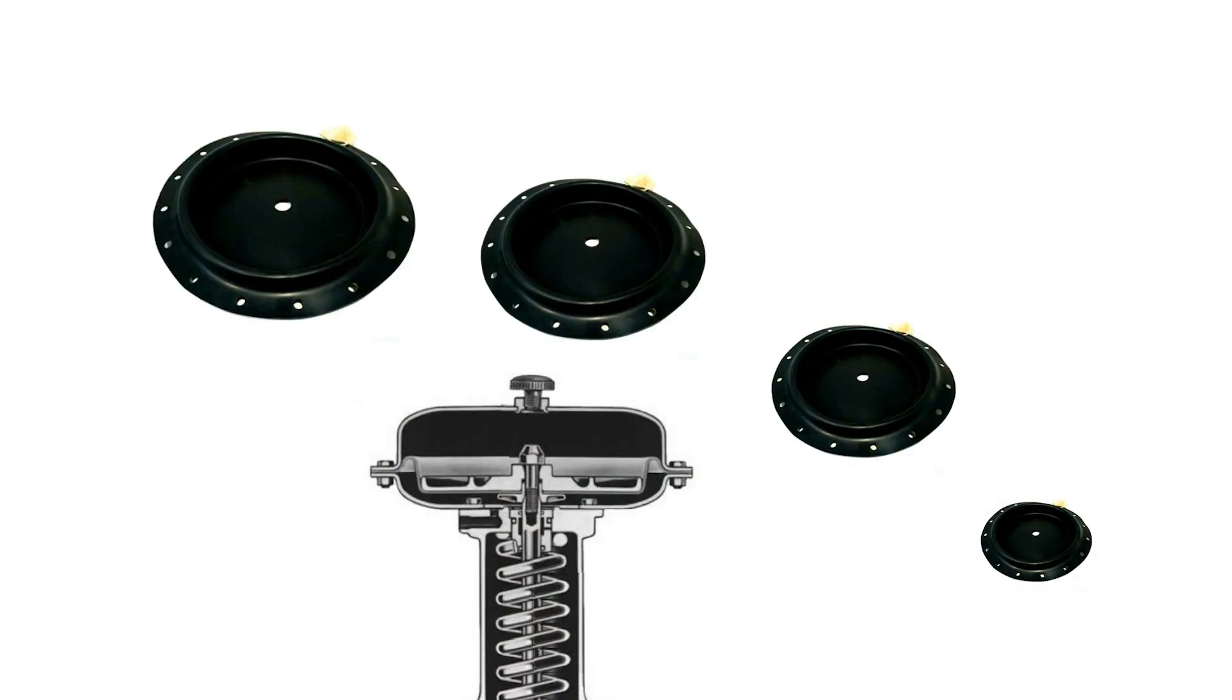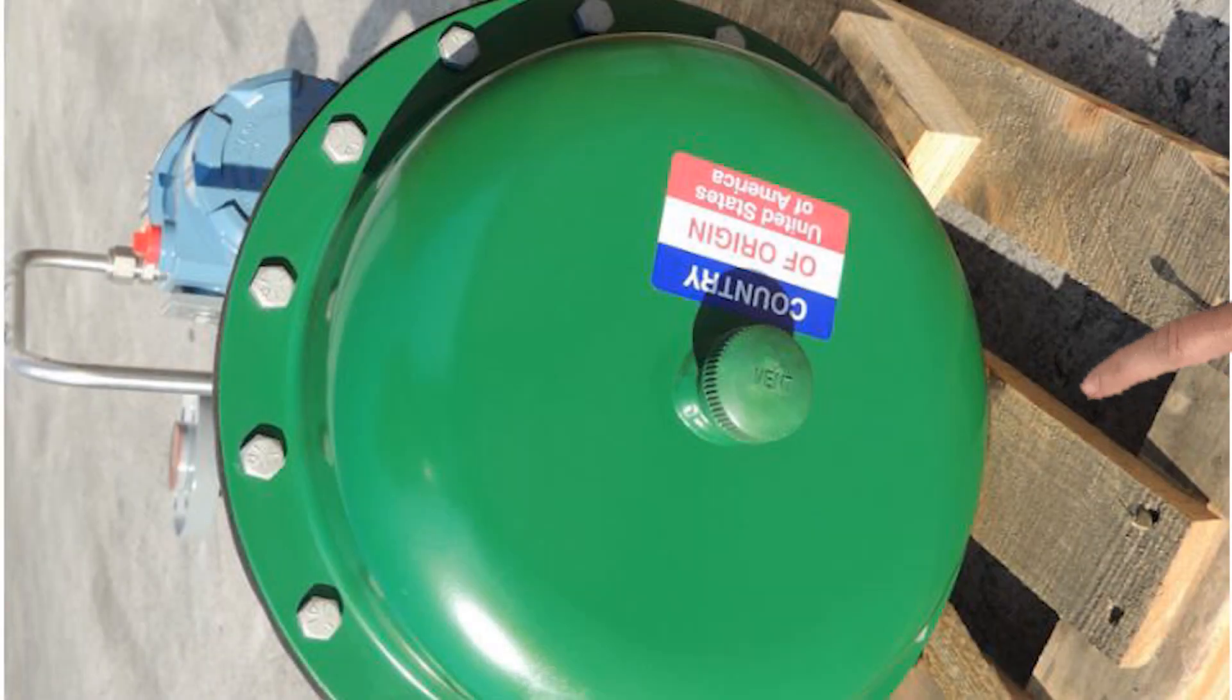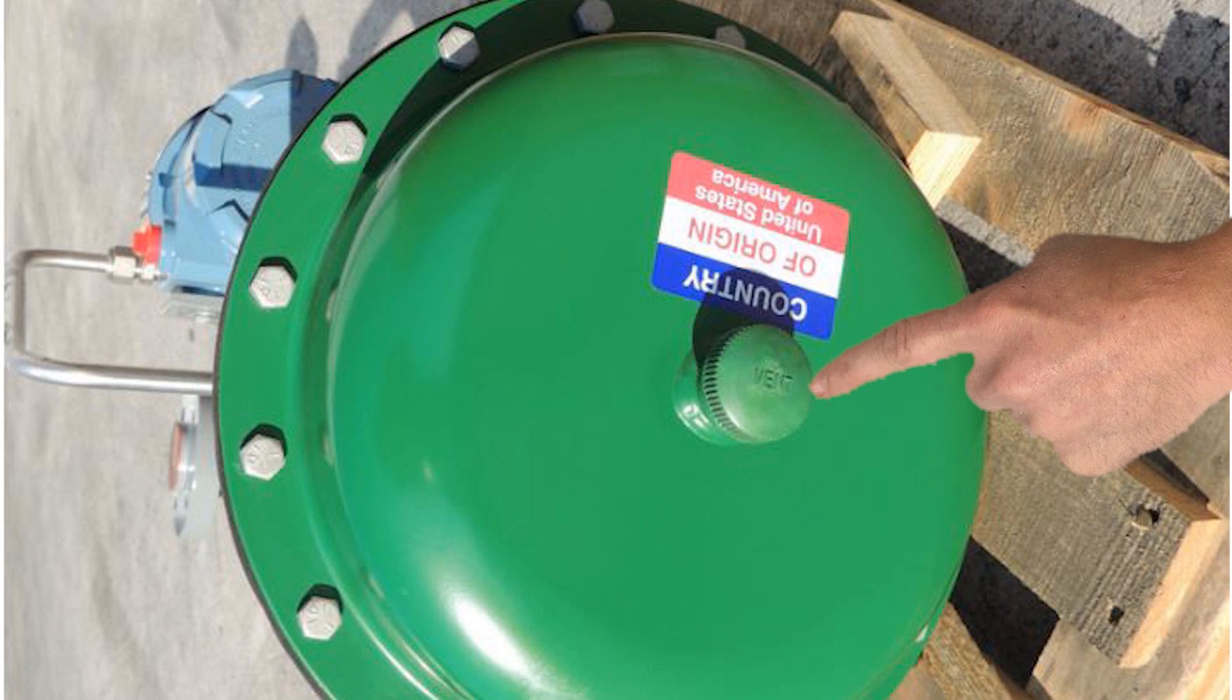The molded diaphragm itself is another potential leak point. Chemicals and moisture can damage the diaphragm if they are allowed to enter the chamber. The vent on top of the actuator prevents this from happening.